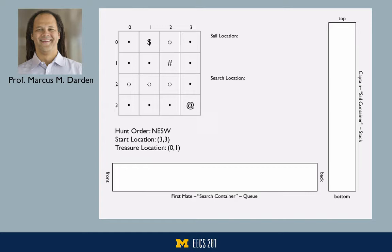Here's what our map looks like. In the upper left hand corner you can see the map with our dots as water locations, our circles as land locations, the start location is the at symbol, the treasure location is the dollar sign with impassable terrain, the octothorpe. Along the bottom I've got the search container, which by default is a queue for the first mate, and on the right hand side you can see the sail container, which is a stack for the captain by default.